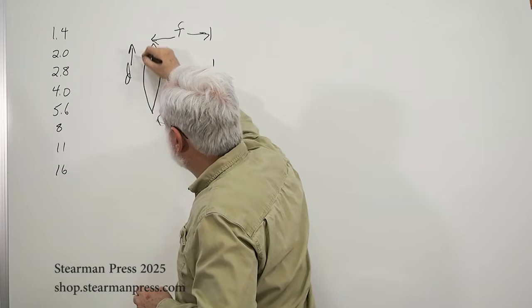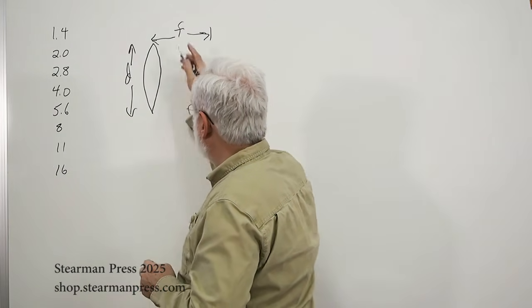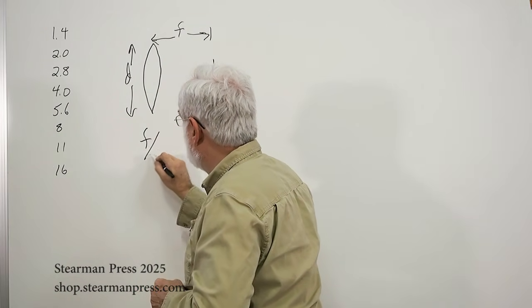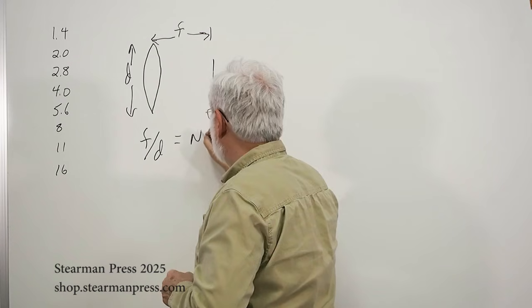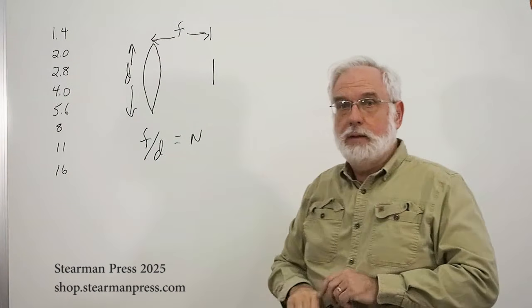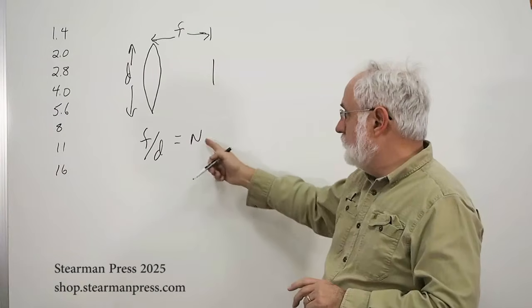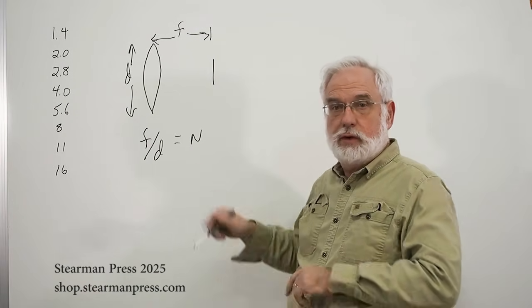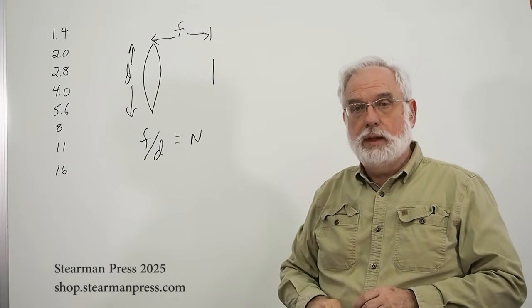and you have the diameter of the lens of the opening, if you divide this out, you get this magic index. And that's where these numbers come from. And any two lenses with the same index are going to basically gather the same amount of light.